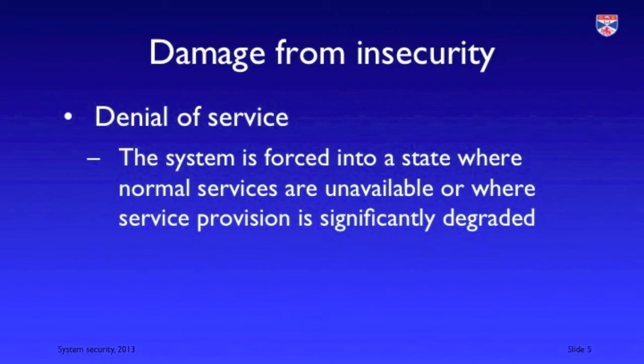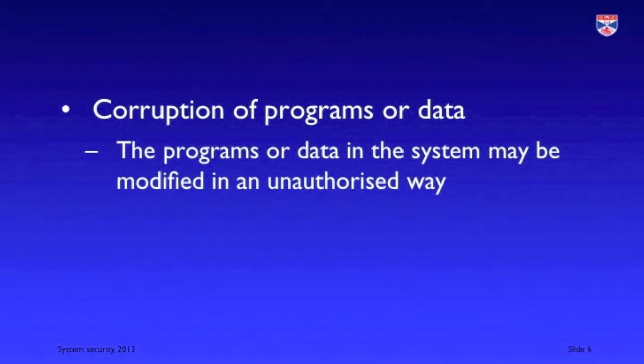We need systems to be secure if they're going to be available, reliable and safe. There are three classes of damage that can result from insecurity. There's damage to the system's availability through a denial of service attack, where the aim of the attack is to take the system down and make sure that it's not accessible to its legitimate users. There's also damage to the digital information — the programs and data in the system — so that the attack attempts to corrupt or destroy these in some way.